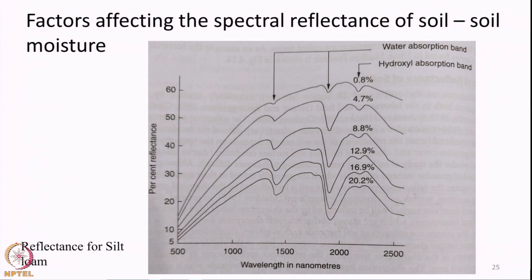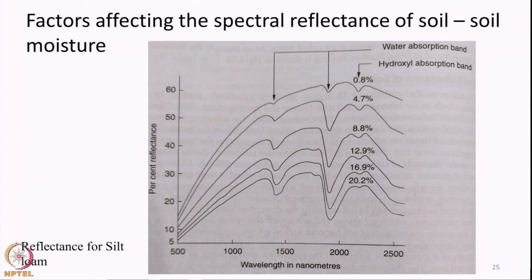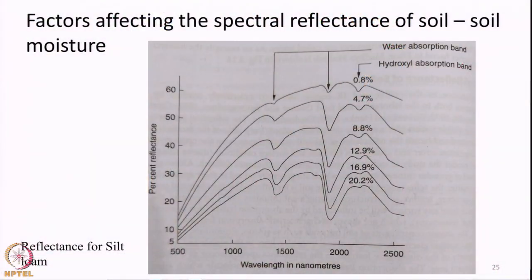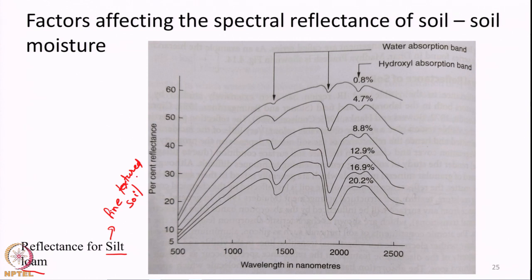The next most important property is the presence of soil moisture. As moisture content in the soil increases, the reflectance will decrease. An example is given here in this slide showing the reflectance of silt loam — a type of fine-textured soil — at increasing moisture content: 0.8%, 4.7%, 20.2% moisture, and so on.